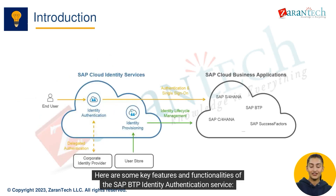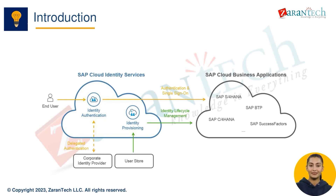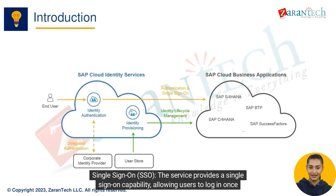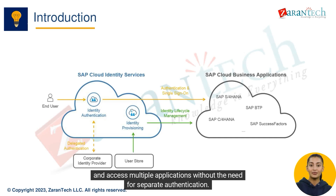Here are some key features and functionalities of the SAP BTP Identity Authentication Service. Single Sign-On (SSO): the service provides a single sign-on capability, allowing users to log in once and access multiple applications without the need for separate authentication.